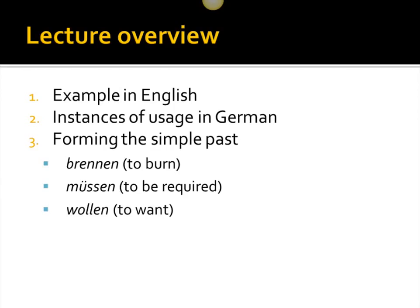When do we use the simple past in German? We're going to be forming the simple past using three verbs — one verb and two modal verbs. Brennen, to burn; müssen, to be required to, to must do something; wollen, to want or to desire. The last two are modal verbs, and the first one, Brennen, is going to be a regular verb.